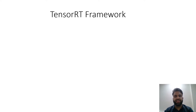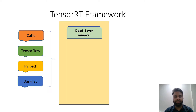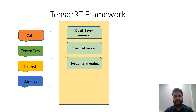Before going into the analysis, let's understand how a TensorRT engine is built from models like Caffe, TensorFlow, PyTorch, and Darknet. TensorRT follows several steps. The first is dead layer removal, where unused layers are removed from the CNN network. Then we have vertical fusion and horizontal merging, where CNN layers are fused together and different branches of the CNN layers are merged together.